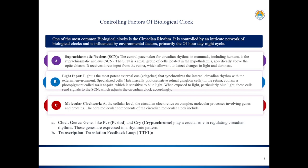When exposed to light, especially blue light from artificial sources such as electronic devices and screens in the evenings, this can delay the body's internal clock by disrupting the circadian rhythm and disrupting hormone production, especially melatonin.